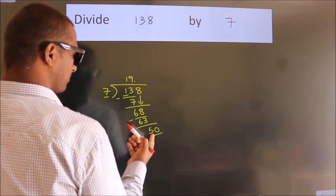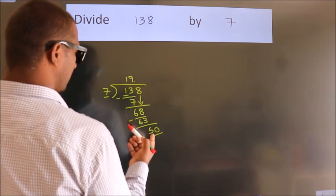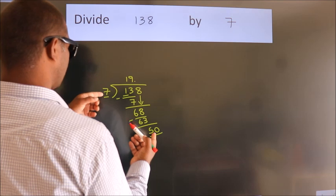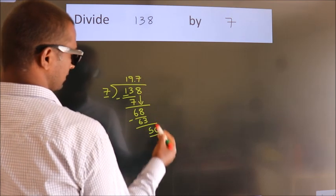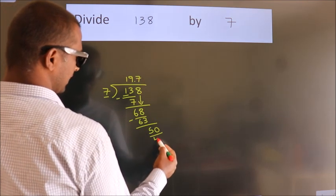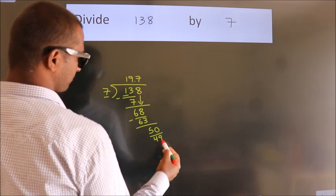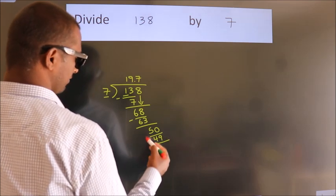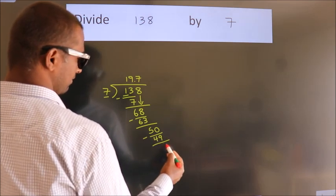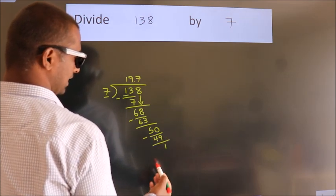A number close to 50 in the 7 times table is 7 sevens, 49. Now we subtract and we get 1.